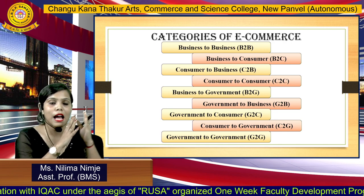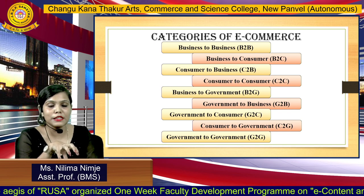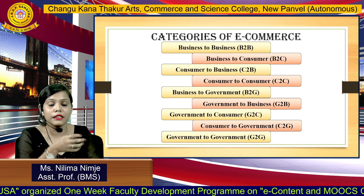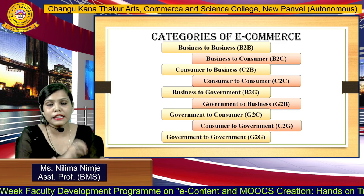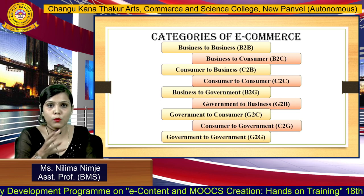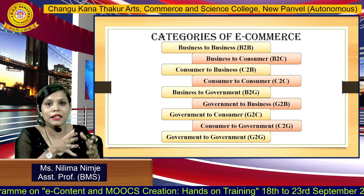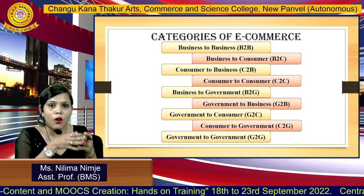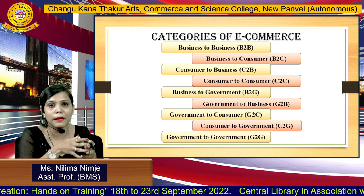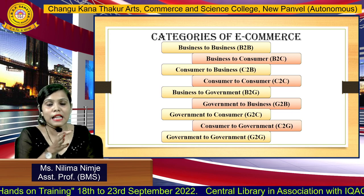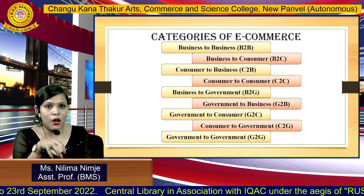Moving towards the next model, B2G — Business to Government. Here businesses sell their products, services, and information to government agencies or organizations. Businesses generally bid on government projects. A recent example is the Mahanagar Gas pipeline installation project in Navi Mumbai, where many contractors bid on that particular project — that is an example of the B2G model.